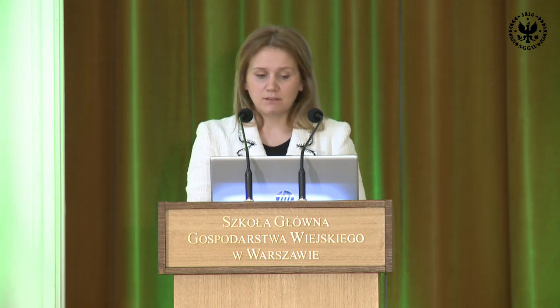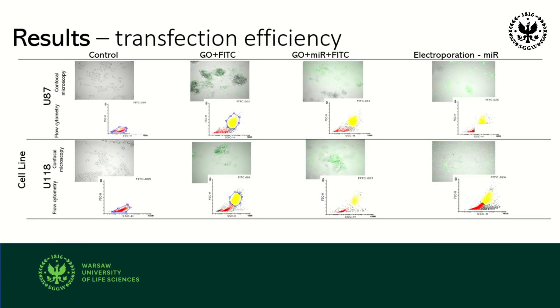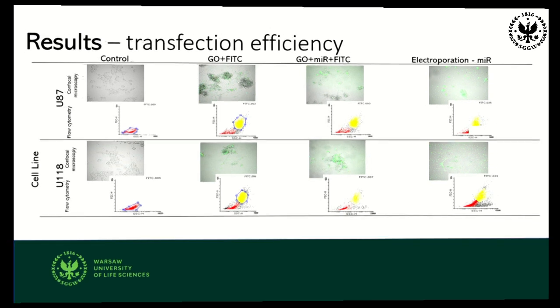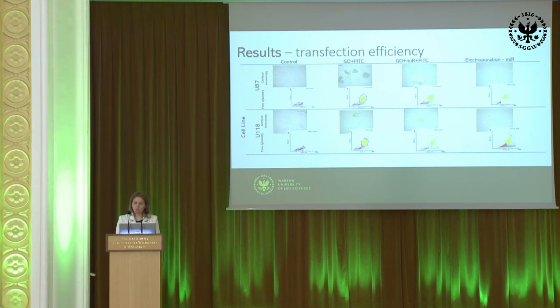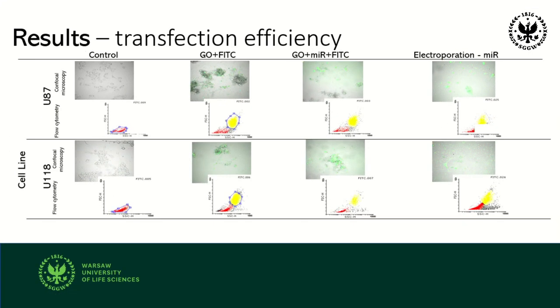We also verified the transfection efficiency. Comparing to the control, we used a fluorescent dye to see whether functionalizing the graphene oxide with the fluorescent dye — in the graphene oxide with microRNA nanosystem or microRNA alone — would show any differences in the level of transfection efficiency. It turns out that the graphene oxide with microRNA and the fluorescent dye accumulated at the highest concentration in the cell body. Neither graphene oxide with fluorescent dye alone nor electroporation performed as well — those complexes efficiently delivered microRNA into cancer cells.